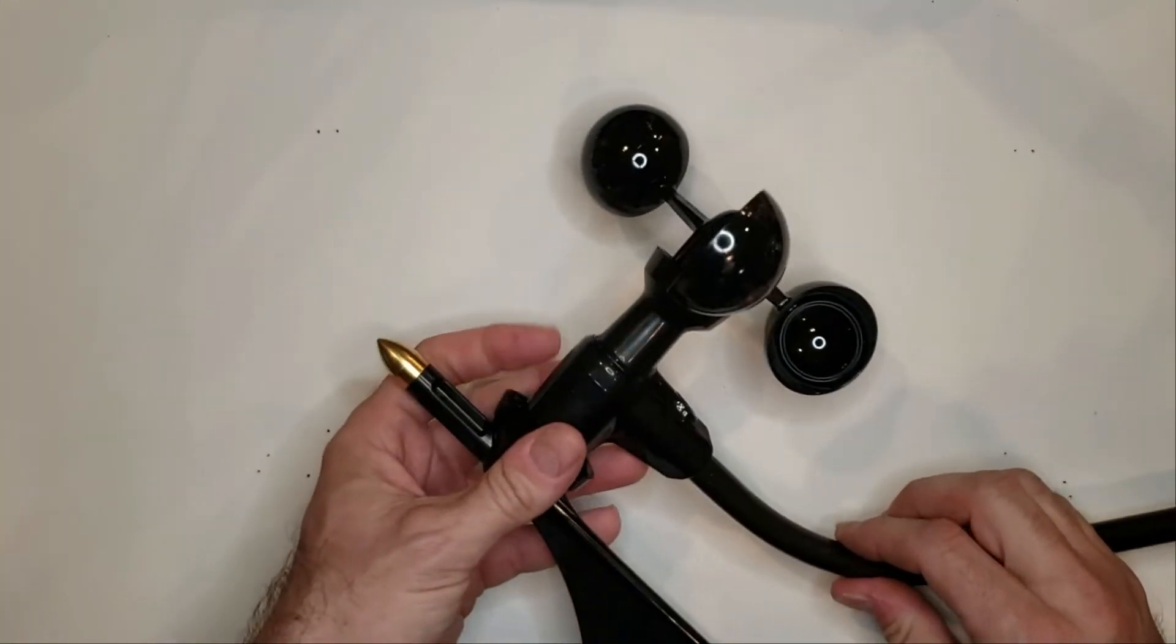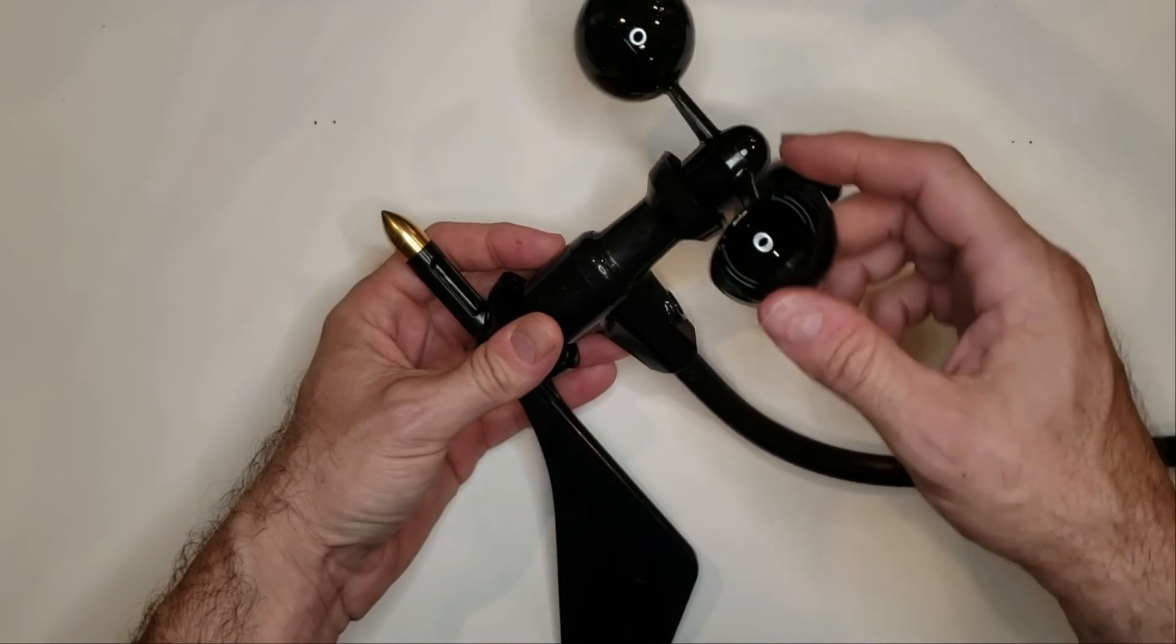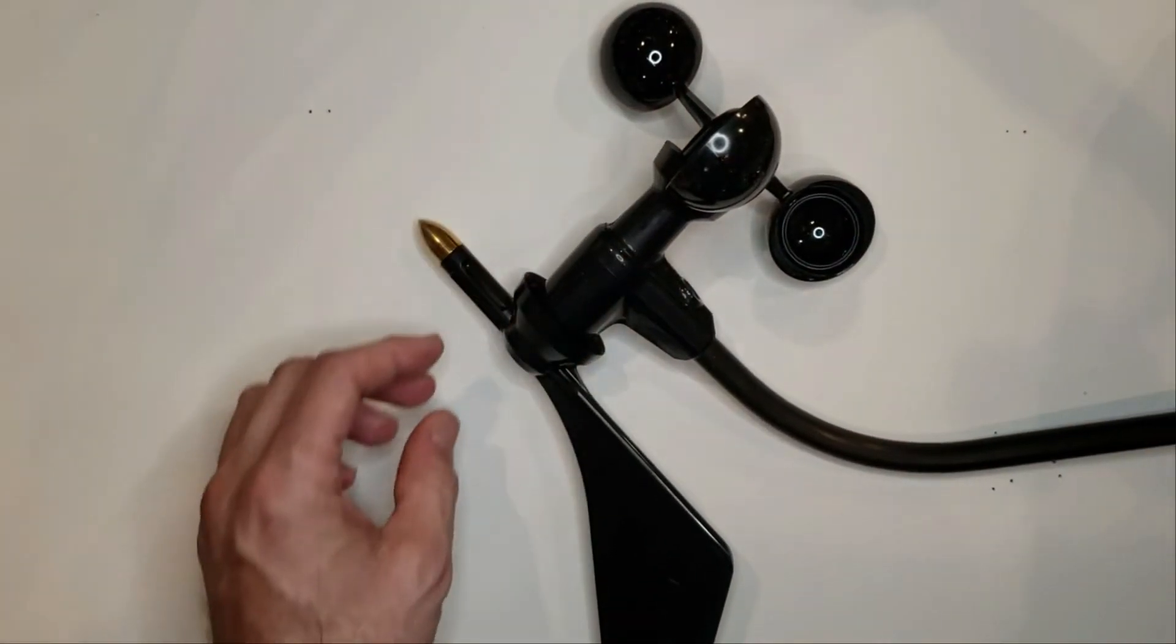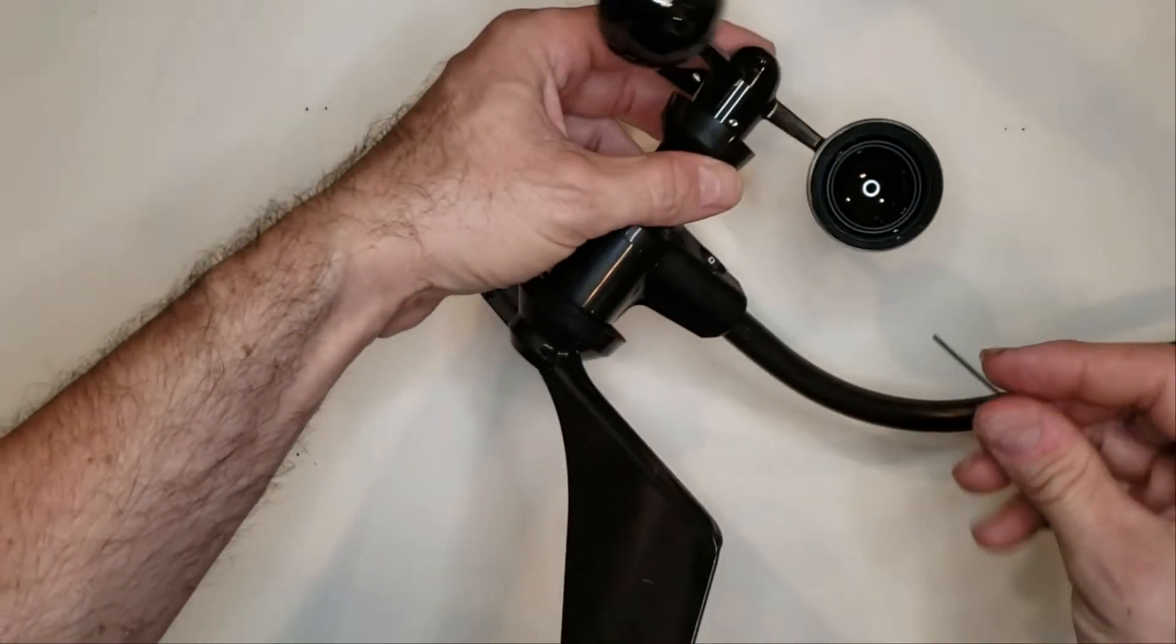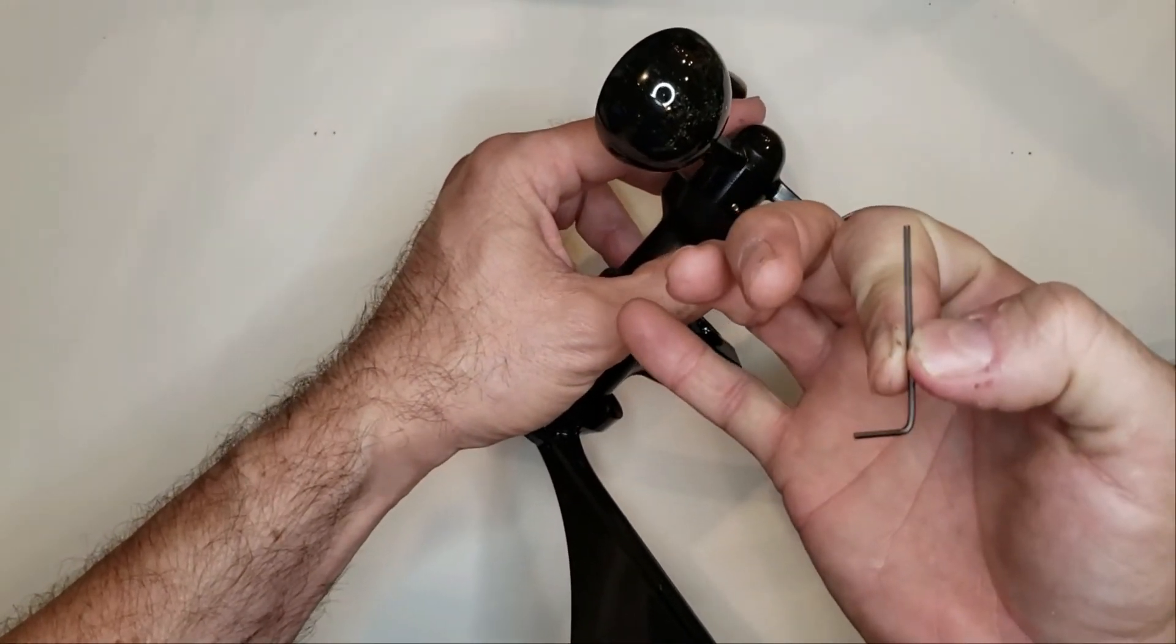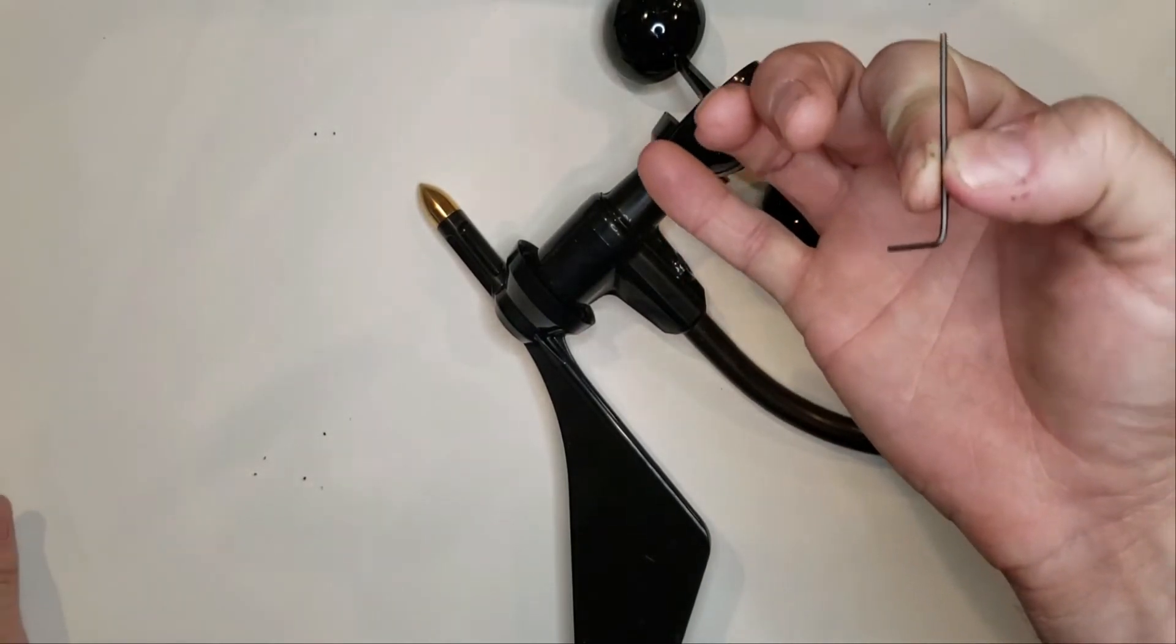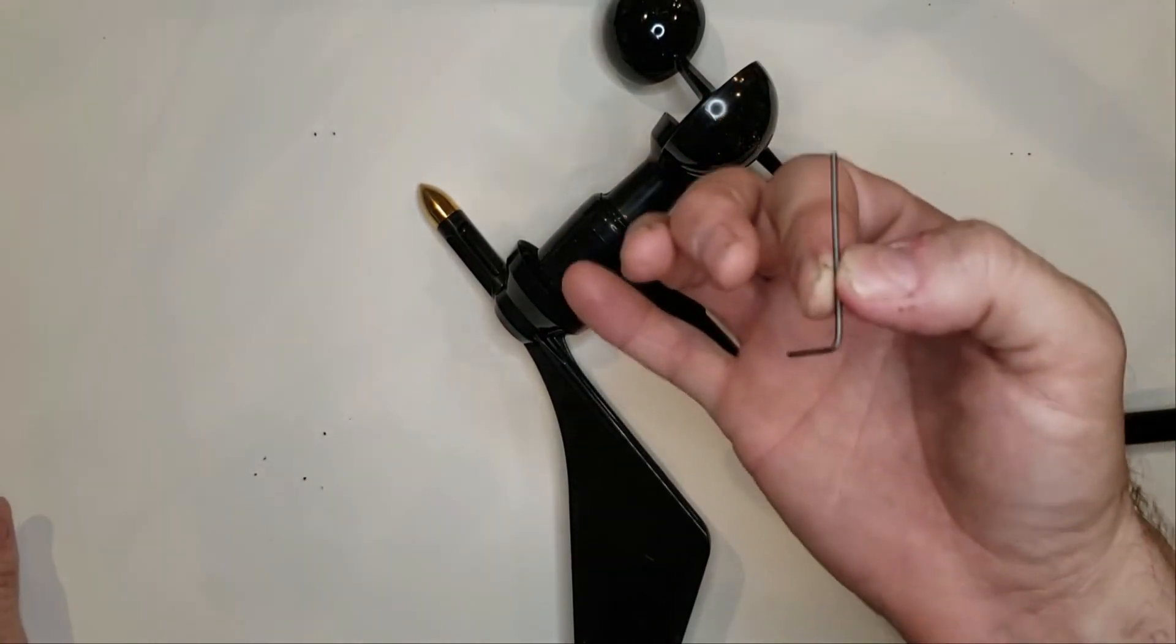Here is an anemometer, Davis 6410, and first thing we want to do is to remove the wind cups. You should have your, hopefully you saved your Allen wrench that came with your Davis weather station.